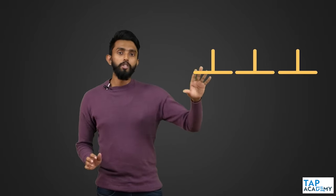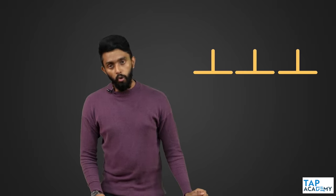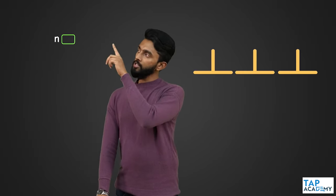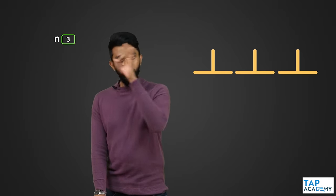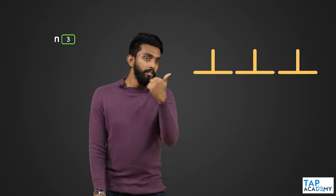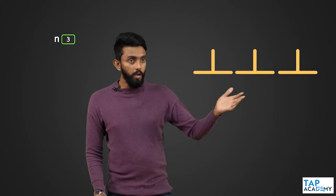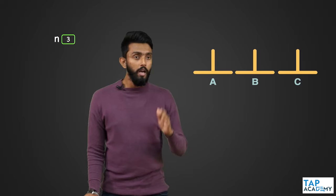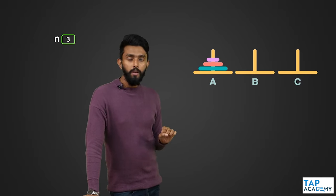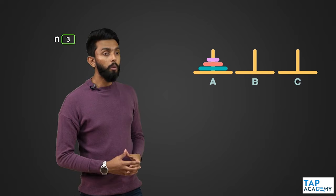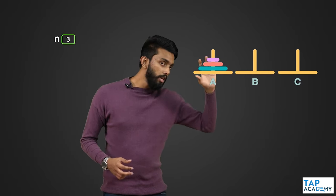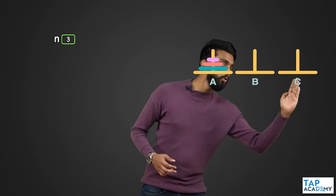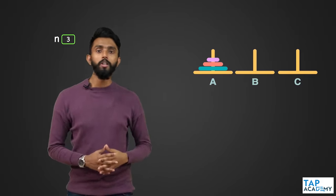What is the Tower of Hanoi problem all about? There are three towers. You will be given an n value — let us assume n is three, which means you have three discs. This is Tower A, Tower B, and Tower C. The ultimate aim of the Tower of Hanoi problem is to move all three discs from the first tower to the last tower.